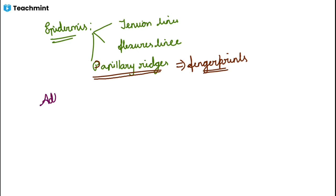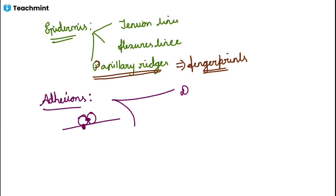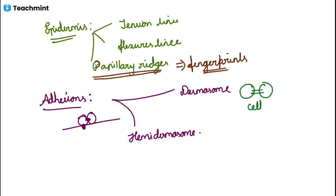In the epidermis, we have cells and a basal lamina or basement membrane. There should be adhesion between the cells, and also between the basement membrane and the cells. The major adhesion is by two different proteins: one is desmosome and the other is hemidesmosome. Desmosome mainly acts between cells — cell-to-cell adhesion. In case of hemidesmosome, it acts between cells and the basement membrane.